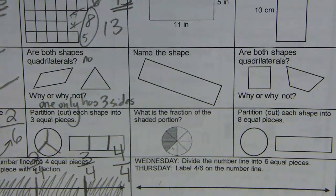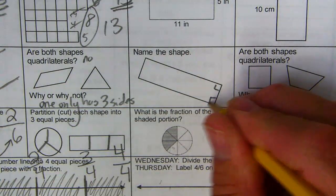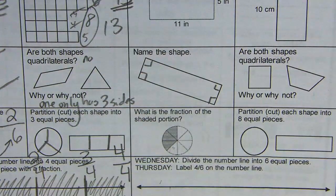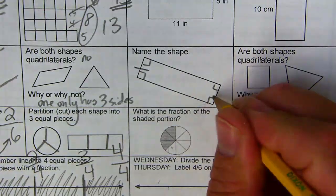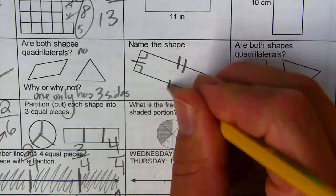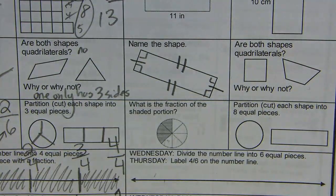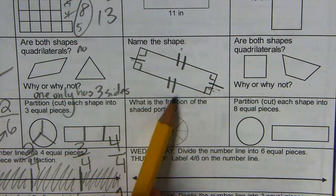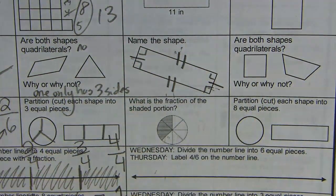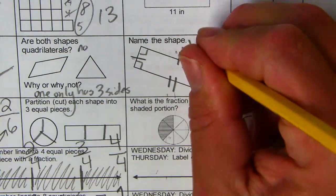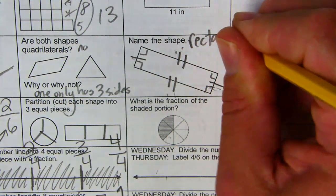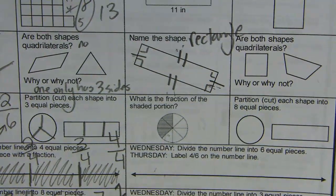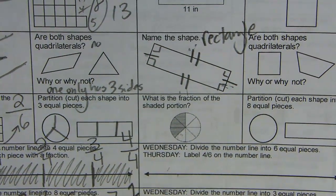Naming the shape. It looks like we have four right angles. It looks like we have opposite sides are the same length. So if we have opposite sides are the same length, we do not have four sides that are the same length. That would be a square, so this is a rectangle.